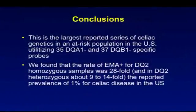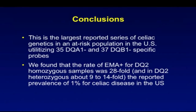There are several conclusions we can draw from this large data set. This is the largest reported series of celiac genetics in an at-risk population in the United States, utilizing 35 DQA1 and 37 DQB1 specific probes. We found that the rate of EMA positivity for those who are DQ2 homozygous is 28-fold that of the reported 1% prevalence for celiac disease in the US population, and for the DQ2 heterozygous about 9 to 14-fold.